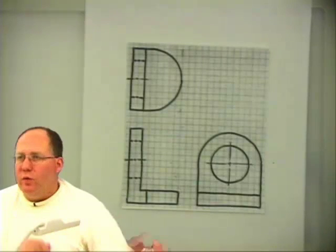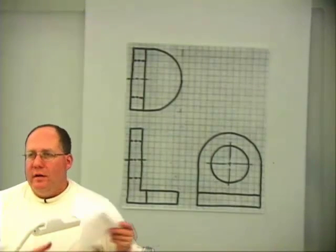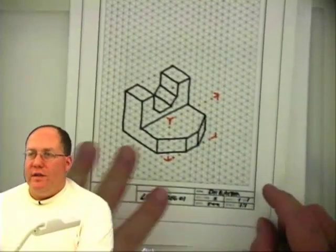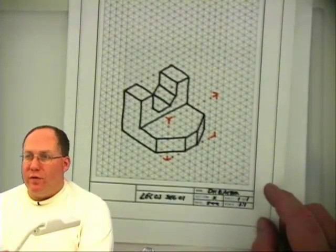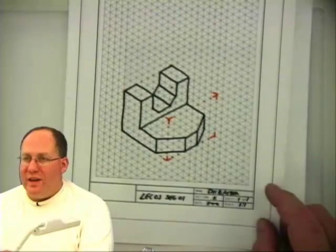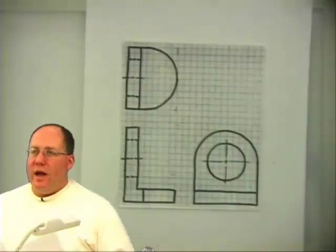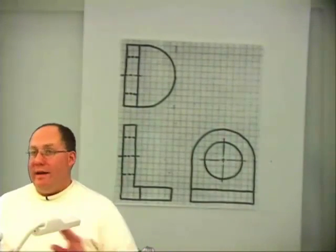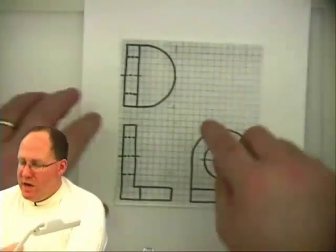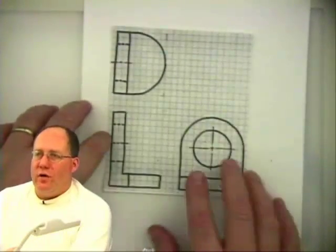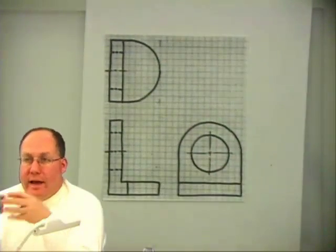Remember last time we worked very hard to create this view here, and we did that from its three principal orthographic views. We're going to do the same thing again today, only this time we're going to have a little bit of curvature thrown in. And this has an interesting problem.